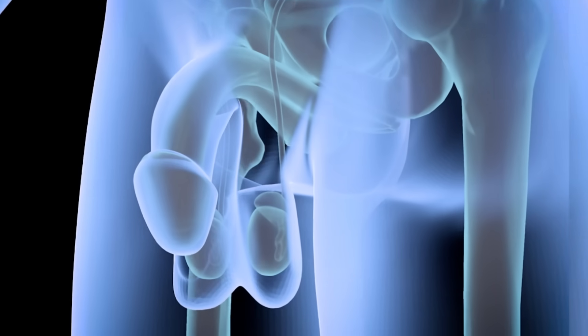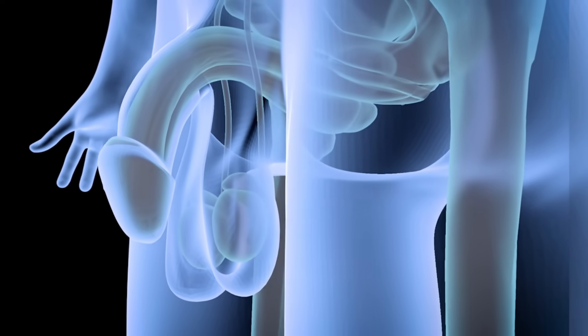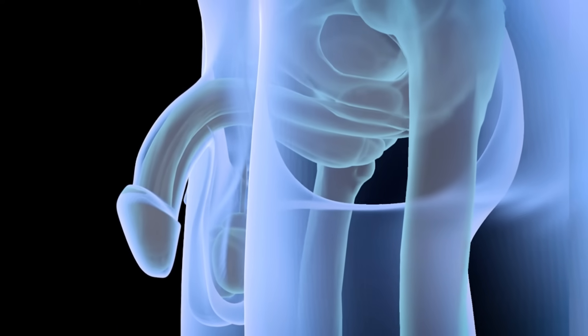The male reproductive system includes the testicles, two oval structures where the male reproductive cells, sperm, are produced.